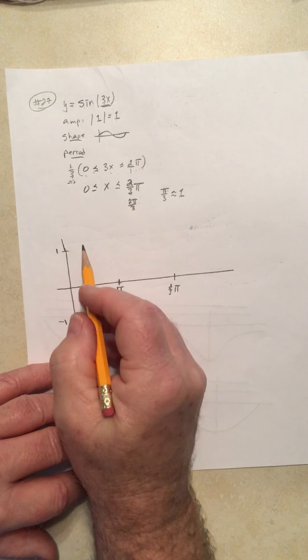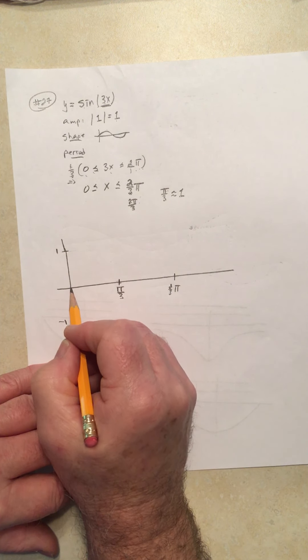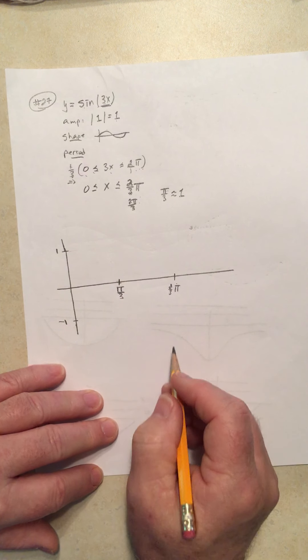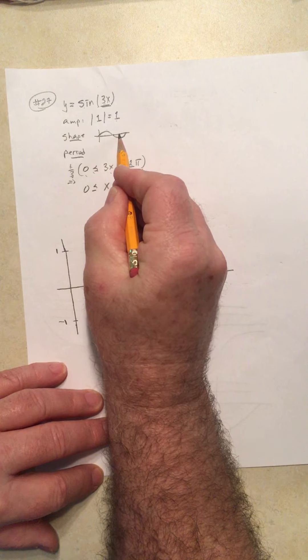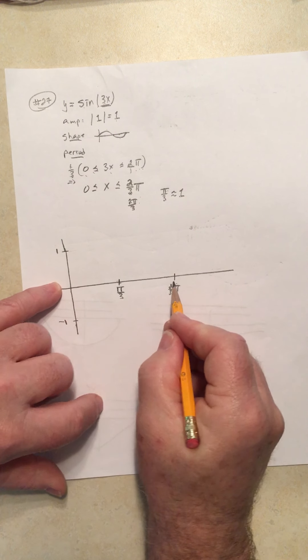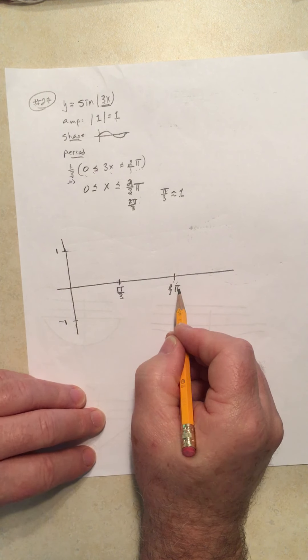Alright, so one complete cycle, the period we're going to draw over, the interval we'll draw over is from 0 to 2/3 π. So we need to go through 1/4, 2/4, 3/4, 4/4. Divide this 2π over 3 into 4 equal pieces and label those pieces.